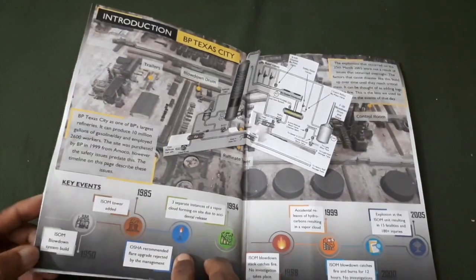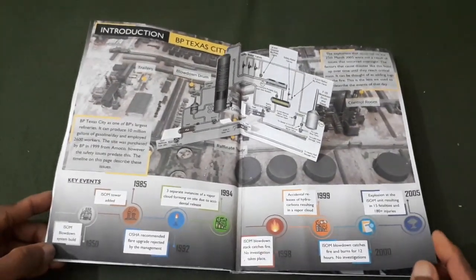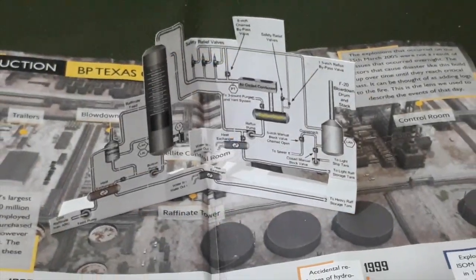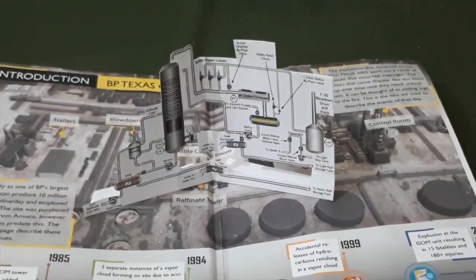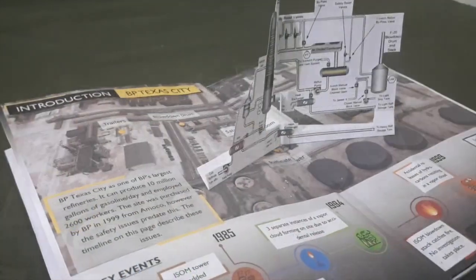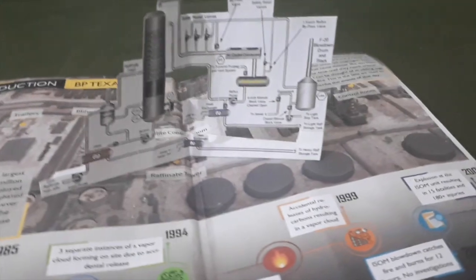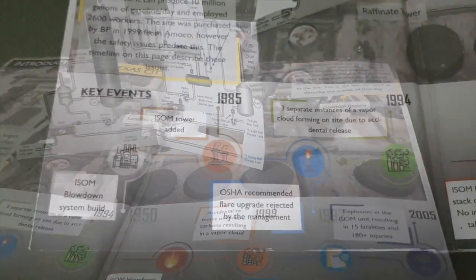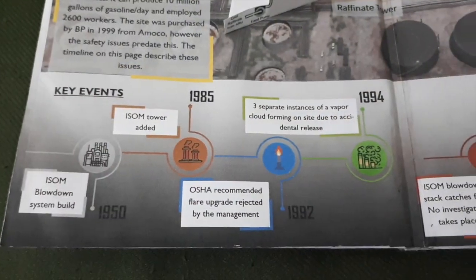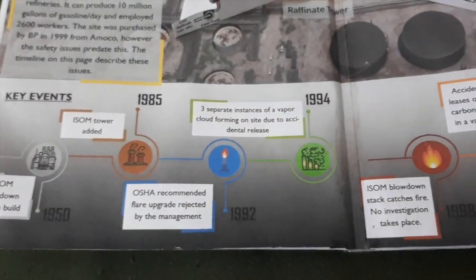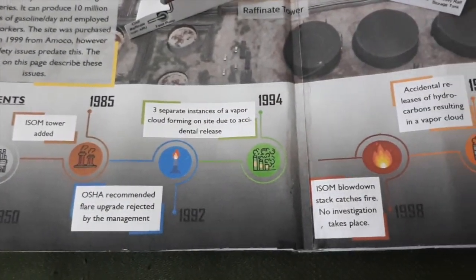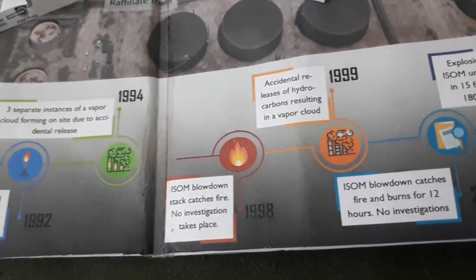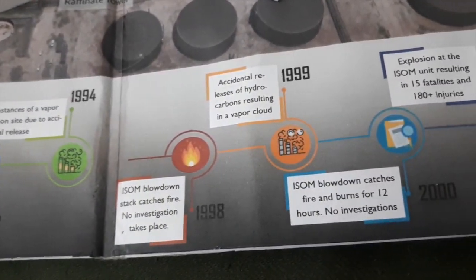This page shows a brief introduction to the site, with the central image showing the PFD of the ISOM unit. Along the bottom, it highlights the key events from the 1950s leading to the disaster in 2005.